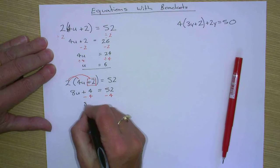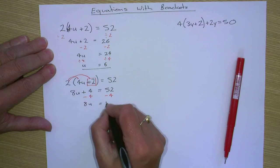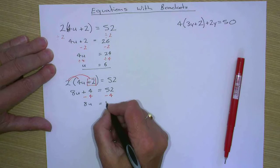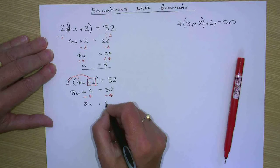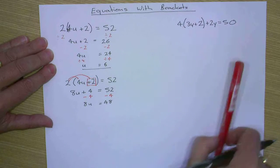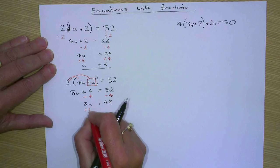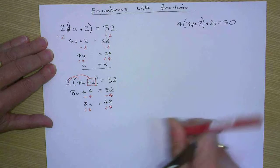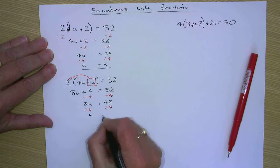So eight u equals forty-eight. And then we divide both sides by eight. And u equals six.